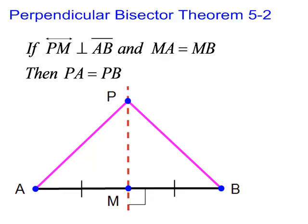The perpendicular bisector theorem states that if PM is perpendicular to AB, let me throw some right angles in there, and MA is congruent to MB, then these two lines PA and PB have to be congruent.